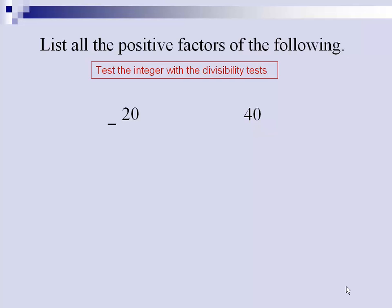So for number 20, we would start with the number 1. 1 would divide by 20 twenty times, so we would get 1 and 20. Then we check if 2 divides by 20, and it does, and the pair would be 10.